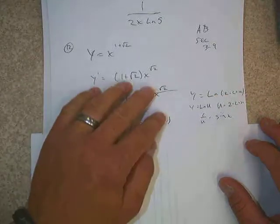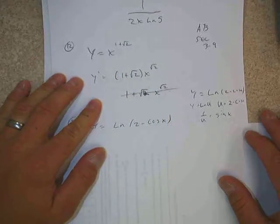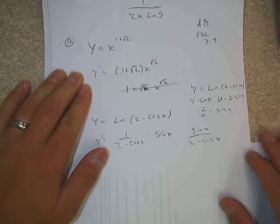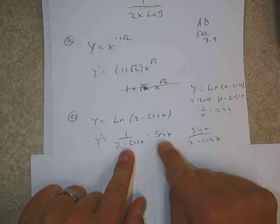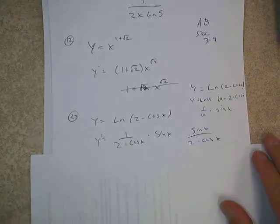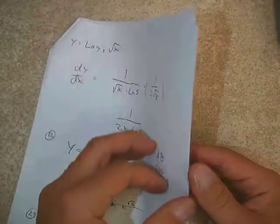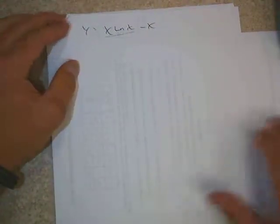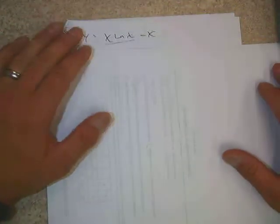For the natural log of (2 minus cosine x): letting u be the inside function and recognizing natural log as the outside, we apply 1 over u times the derivative of (2 minus cosine x). The derivative of negative cosine is sine. So the final answer is sine x over (2 minus cosine x).